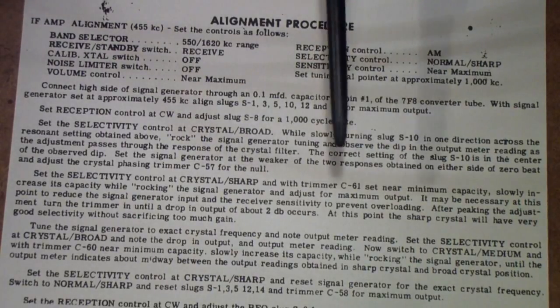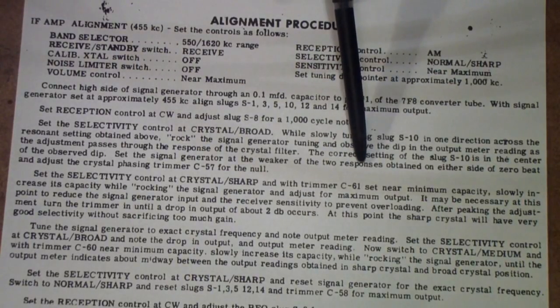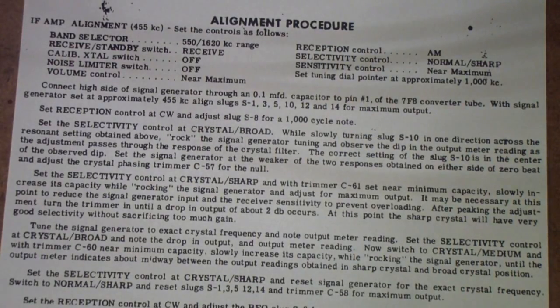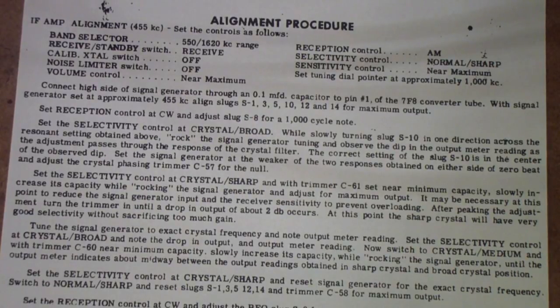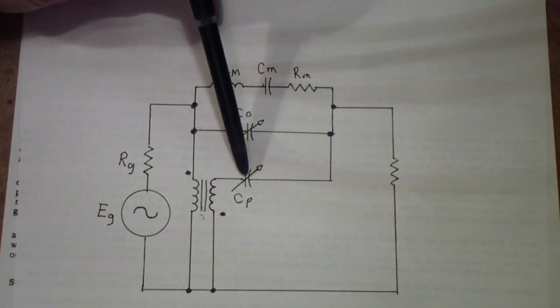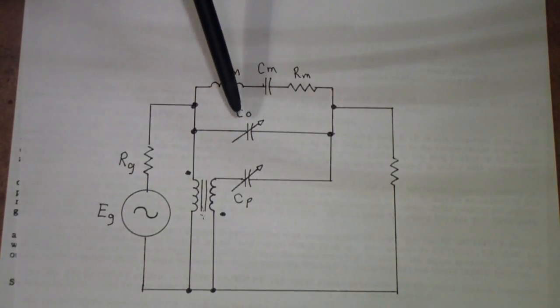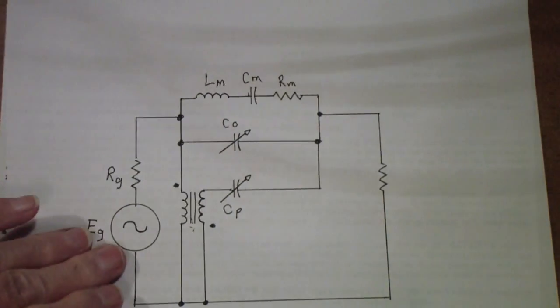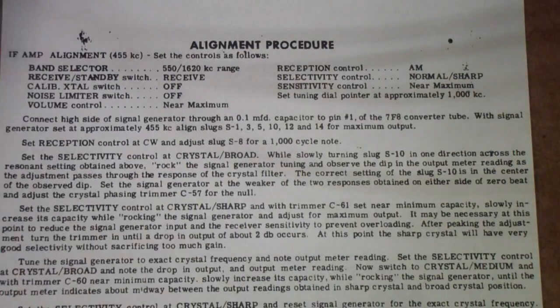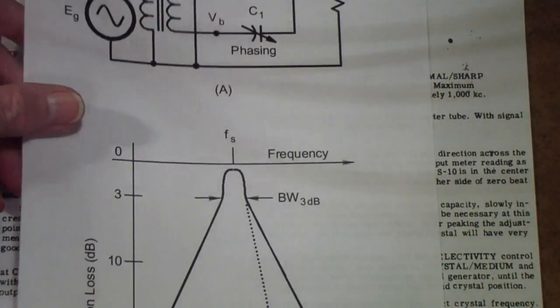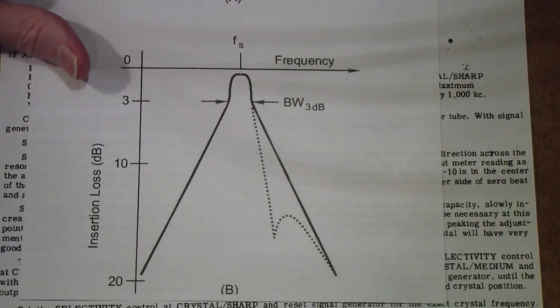that is this point in other words you're trying to set the generator to the parallel resonant frequency then you adjust the phasing trimmer now the phasing trimmer is the adjustable part of this capacitor which once again is 180 degrees out of phase with the capacitance inside the crystal so that sets the response to look something like this